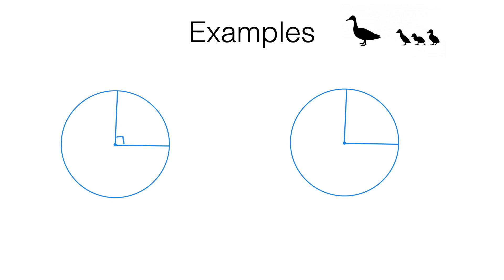Let's say I've got a right angle here, so we know that is 90 degrees. What fraction of the circle is this part here? Hopefully you'd be able to tell me that is one quarter. But what if I have something very similar that actually has an 89 degree angle here? What fraction of the circle have I got now? Hopefully you can see it's going to be a bit less than a quarter of the circle, because this angle is less than 90 degrees.